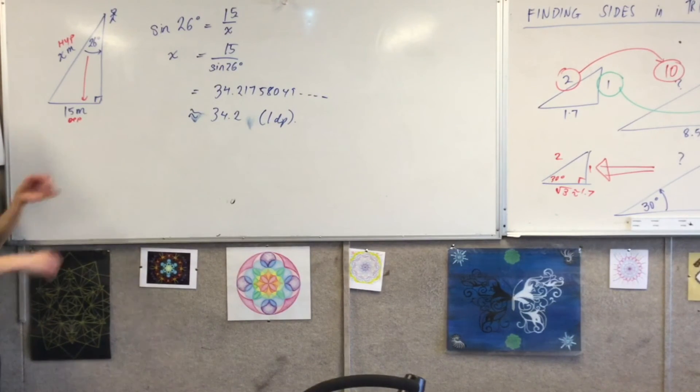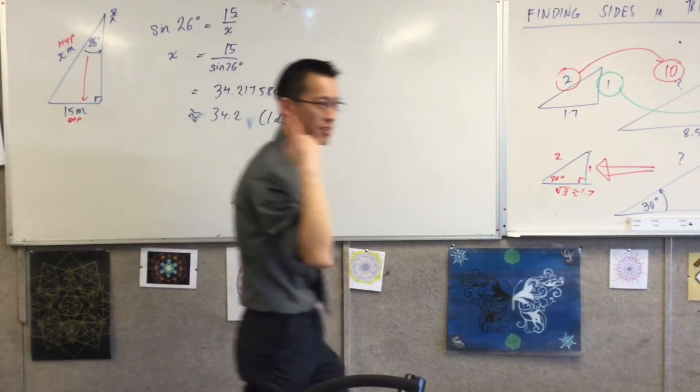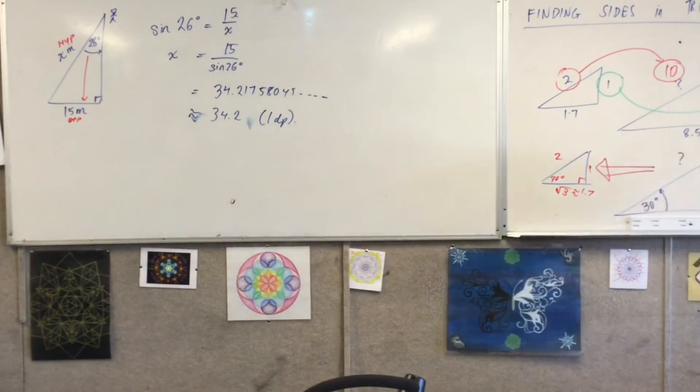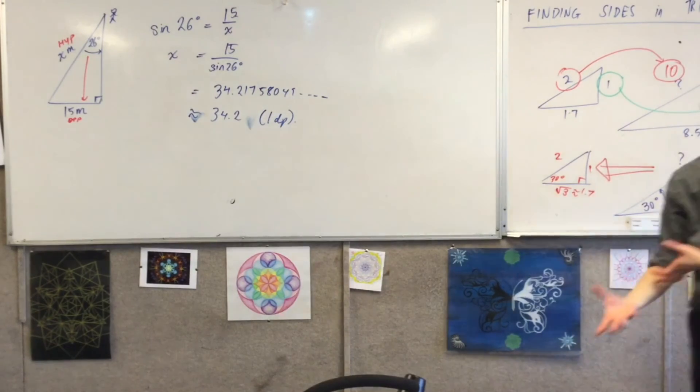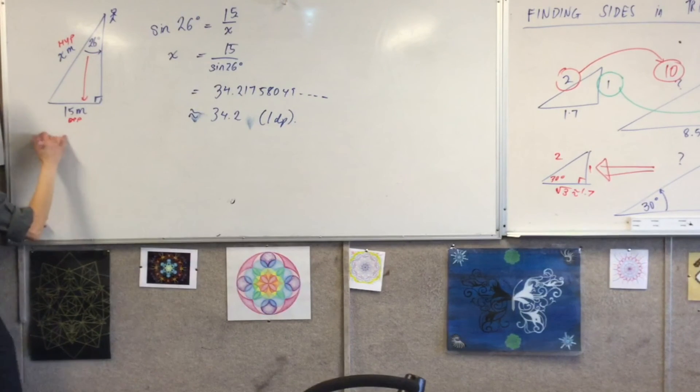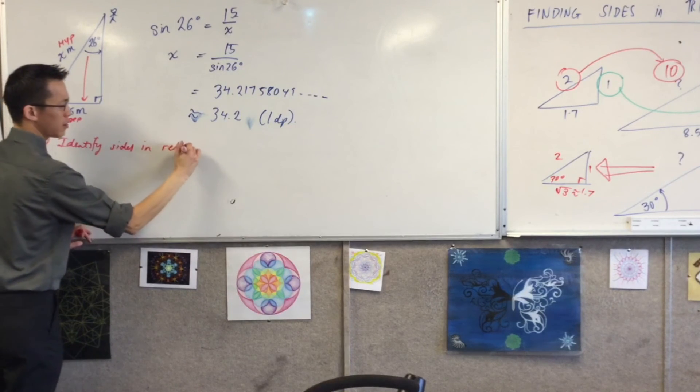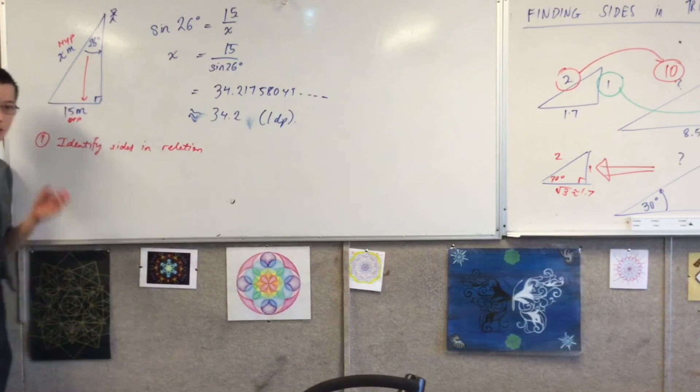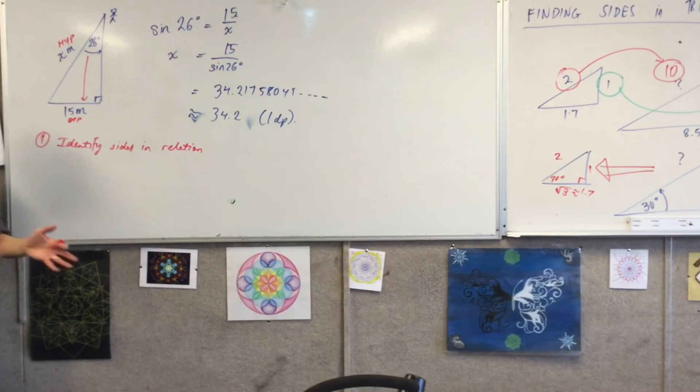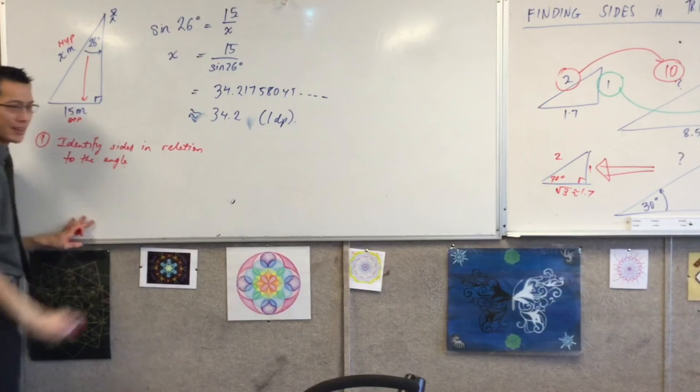So what did we do in the triangle? What was my first step? Do you remember? It's coloured. Do you remember what my first step was? I needed to know what the sides were in relation to my angle, okay? You might like to write that down because it's a helpful step. Step one.